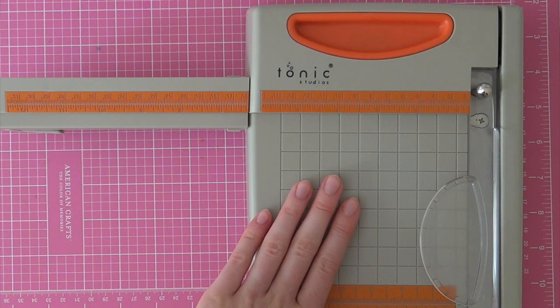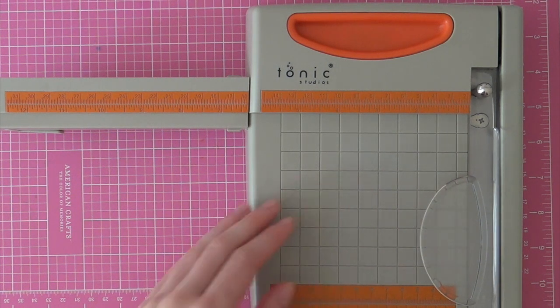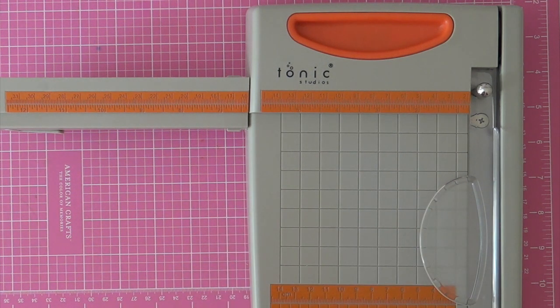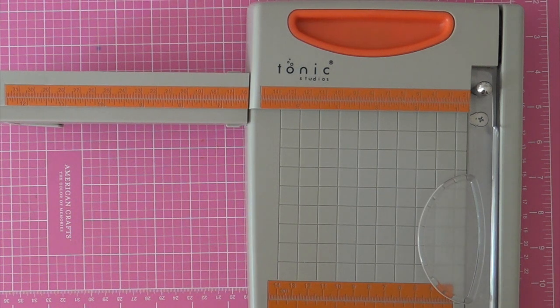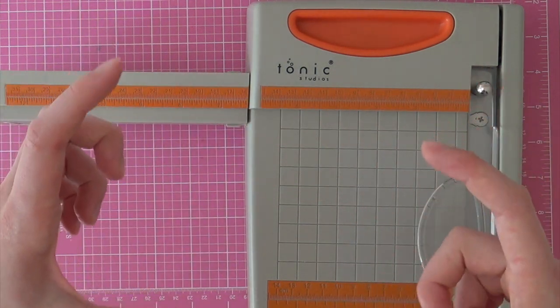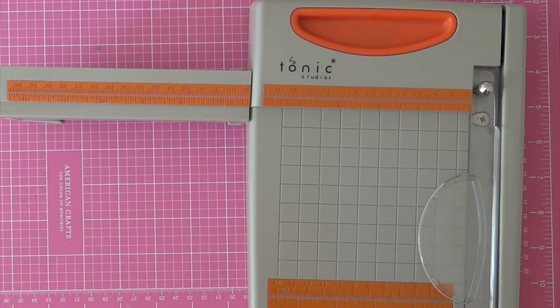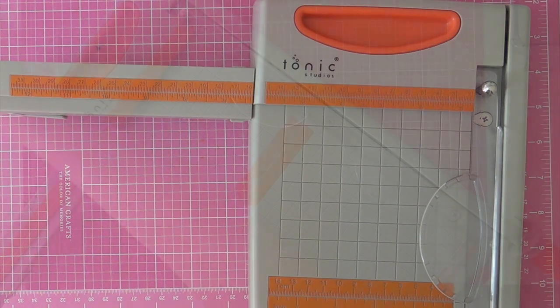So you can cut paper up to 12 inch or 31 centimeter with this paper trimmer, which makes it perfect for card makers and scrapbookers as well. So I decided to get the 12 inch paper cutter since this one allows me to cut portrait cards, so not only the standard landscape cards, but also cards with the folds on the top.